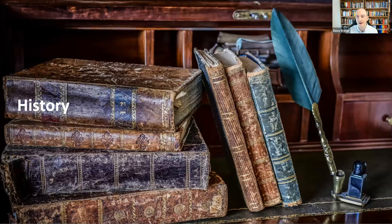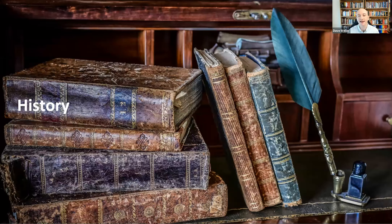First up, one of the earliest proponents of play was Friedrich Frobel, who recognised that children have unique needs and capabilities. In the early 1800s, he created the concept and the term kindergarten as a place for children to play and learn at a very young age. He also emphasised things like hands-on learning, hands-on materials, learning through experience, and child-centred learning.